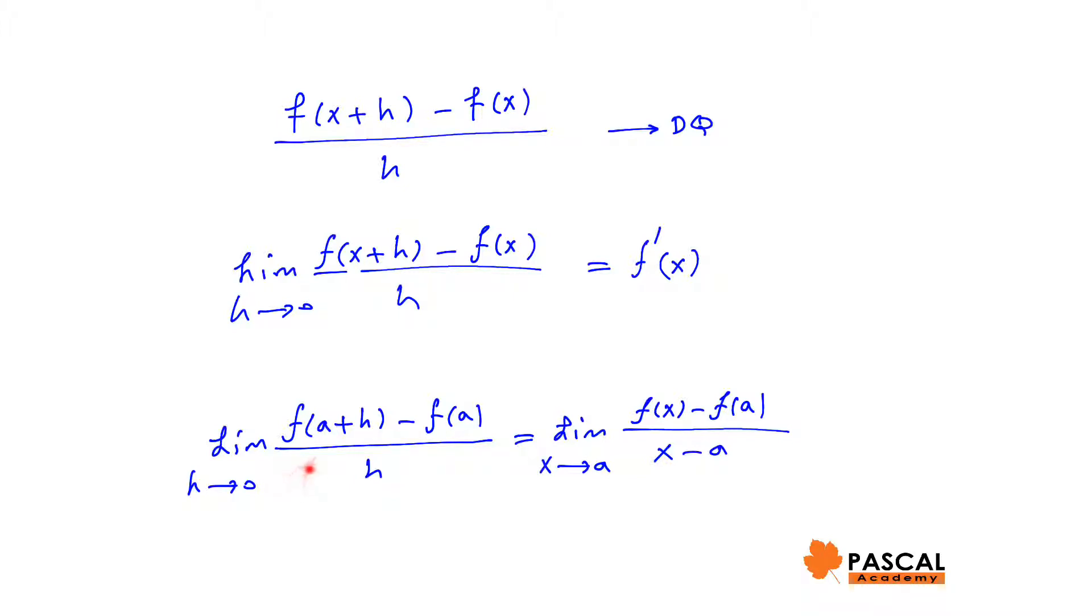We used the limit of difference quotient to find the slope of the tangent line, limit of f of a plus h minus f of a over h, as h approaches 0. It is the slope of the tangent line to the graph of y equals f of x at x equals a, which is instantaneous rate of change of function y equals f of x at x equals a. And it is equal to limit of f of x minus f of a over x minus a, as x approaches a, as we saw in the previous chapter.